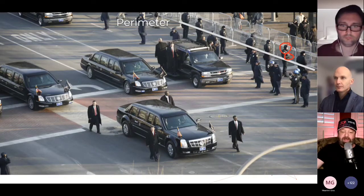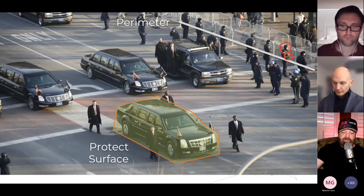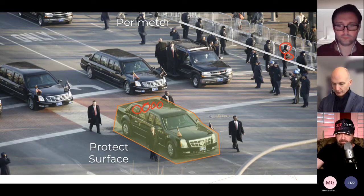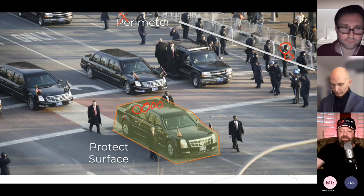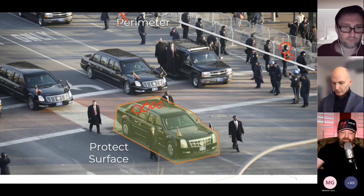The real protection is being done at what I call the protect surface — the fundamental tactical concept of Zero Trust. You must understand what a protect surface is. On this day, there are four individuals in the protect surface: the president, his wife, and his two children. If at the end of the day those four people are left alive, the Secret Service did their job. The protect surface is not the vehicle — that's just transport. Sometimes they're in Air Force One, sometimes Marine One, sometimes walking a rope line. But they are always the protect surface.